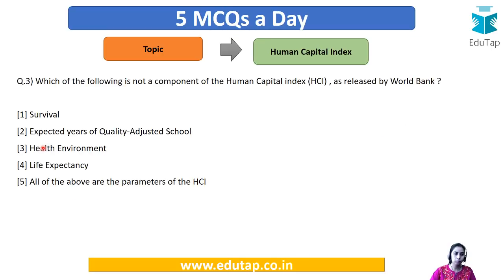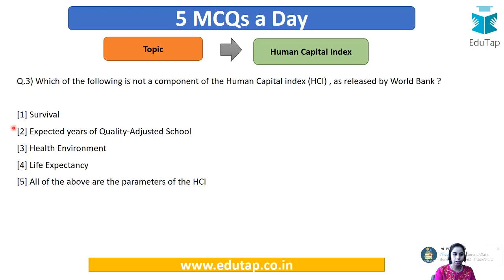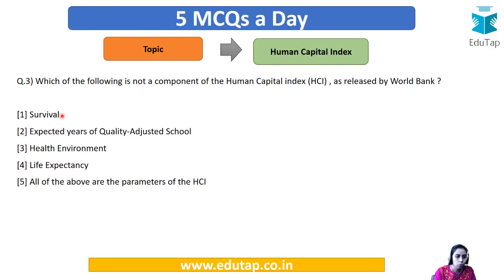Question number three: which of the following is not a component of the Human Capital Index as released by World Bank? Since the index is based on health coverage and education, your options are: survival, expected years of quality adjusted schooling, health environment, or life expectancy. Do you think all of the above are parameters of HCI? The answer is life expectancy — life expectancy is not a direct component. The above three — survival, expected years of quality adjusted schooling, and health environment — are the actual components.